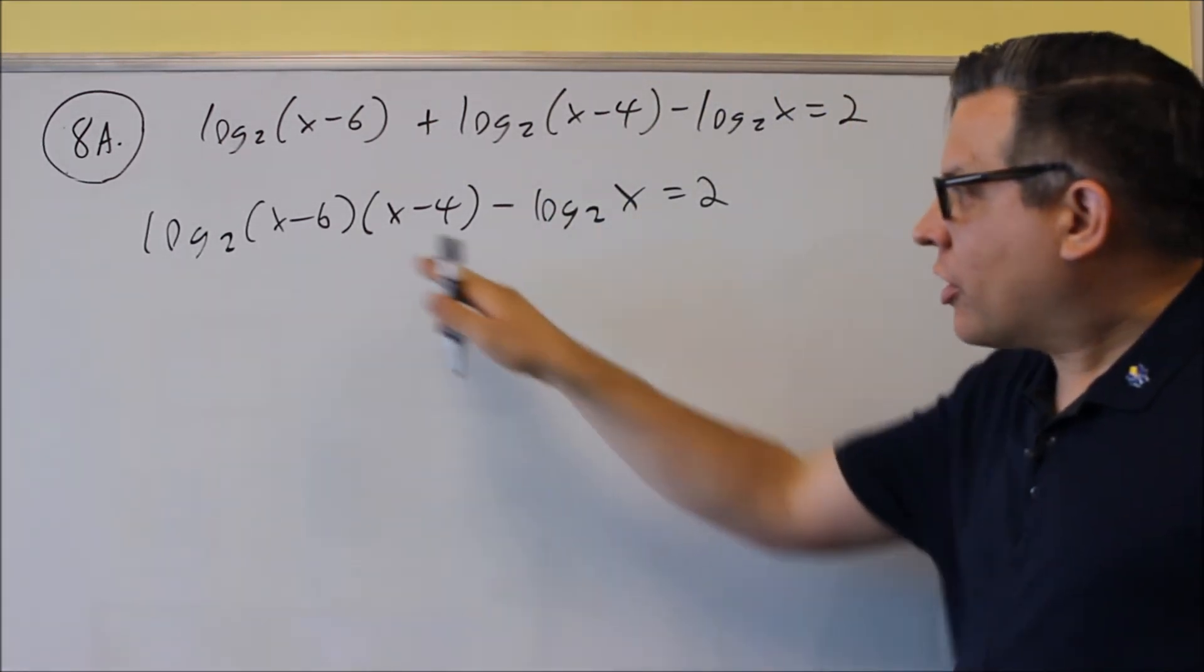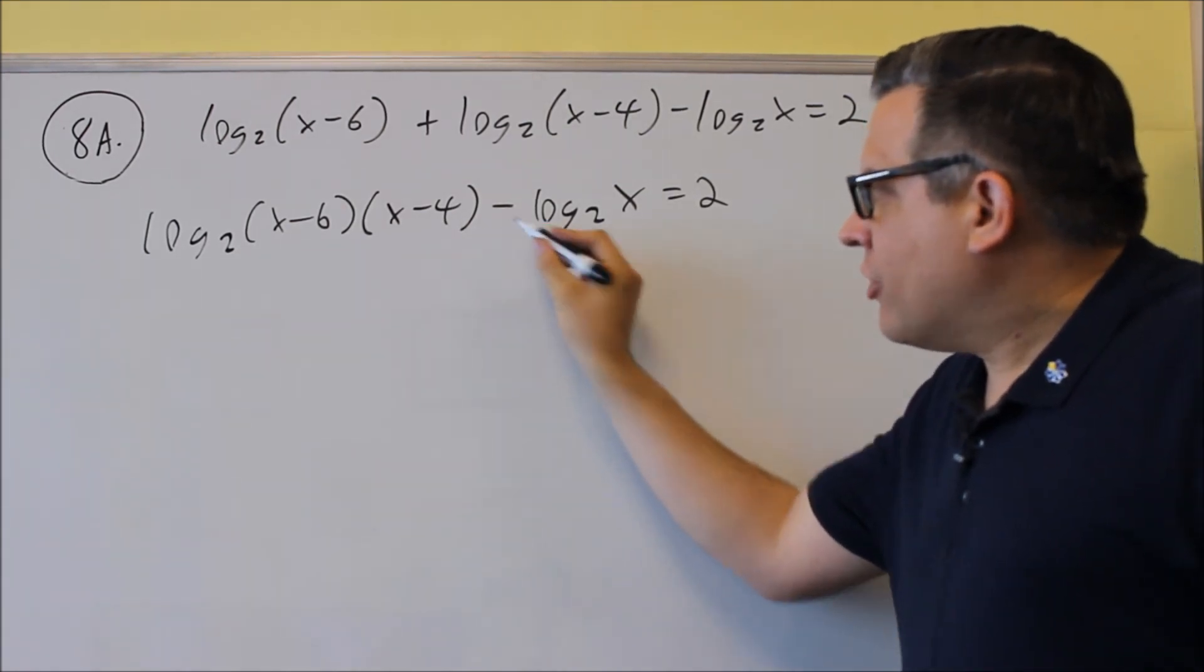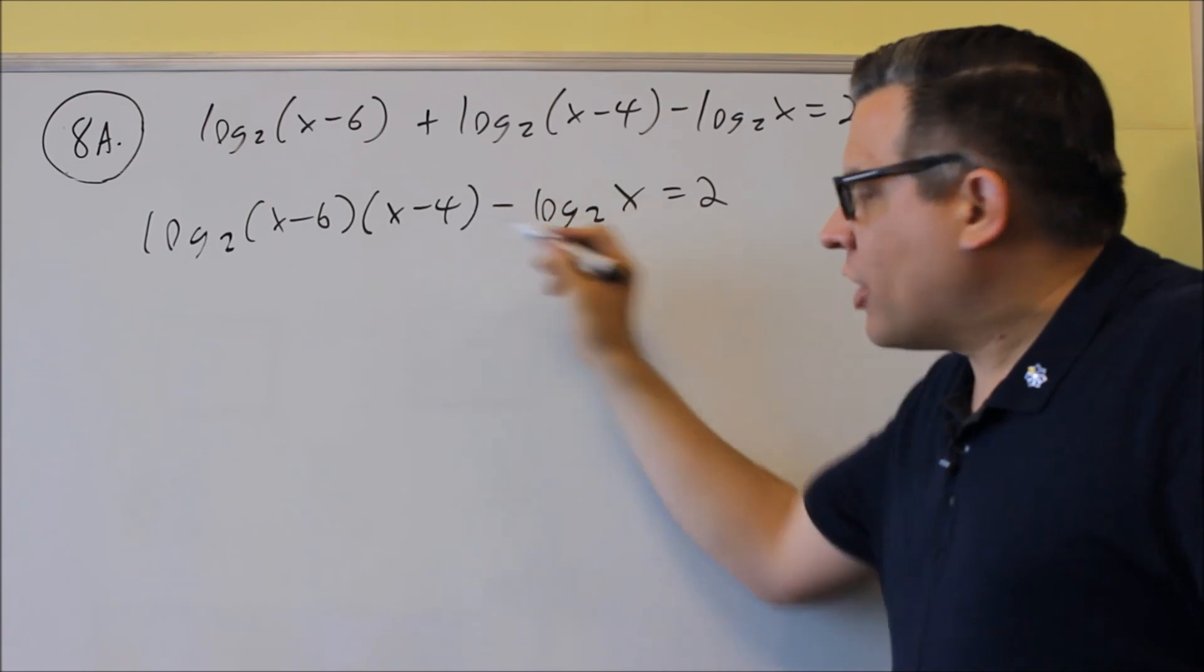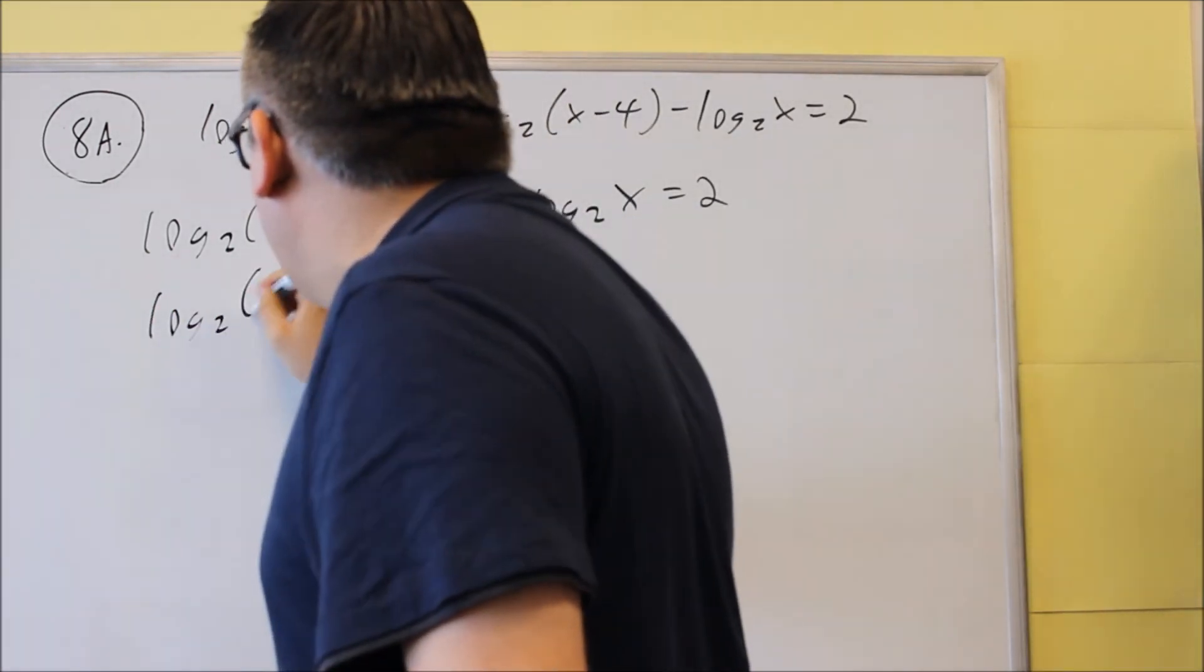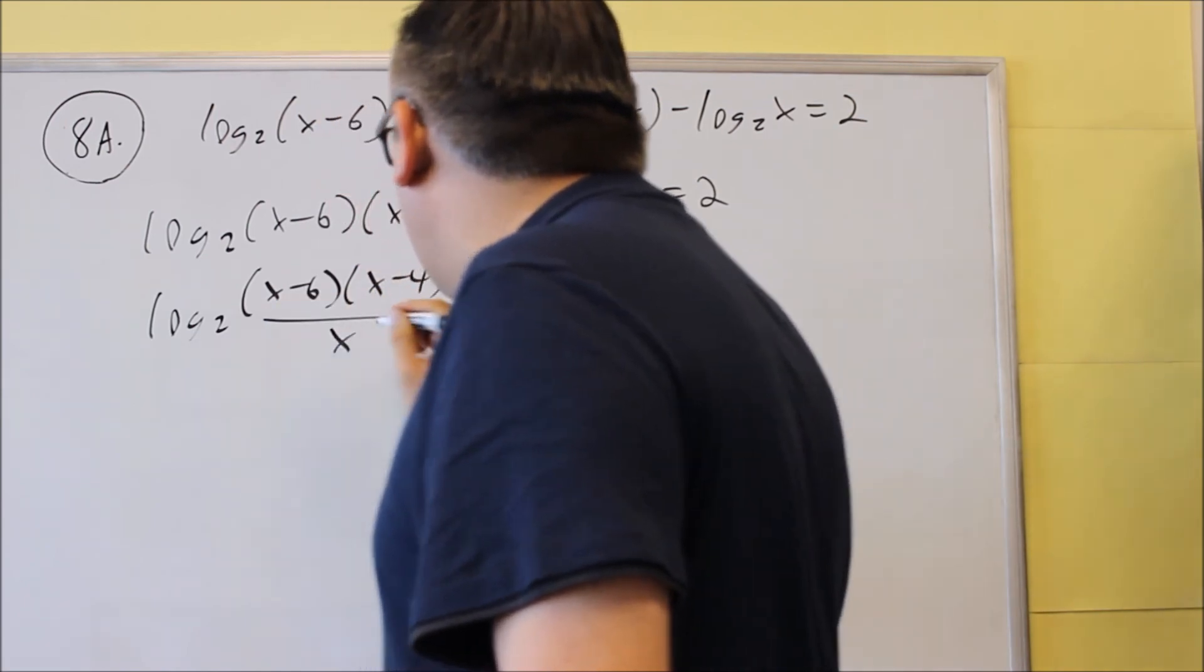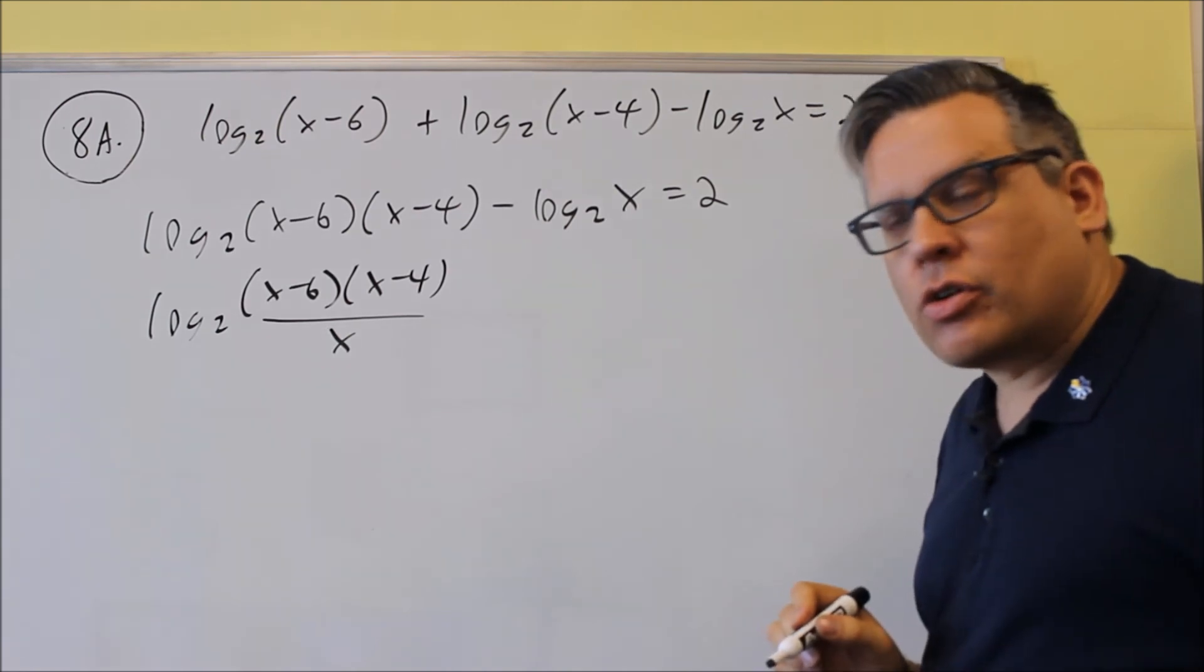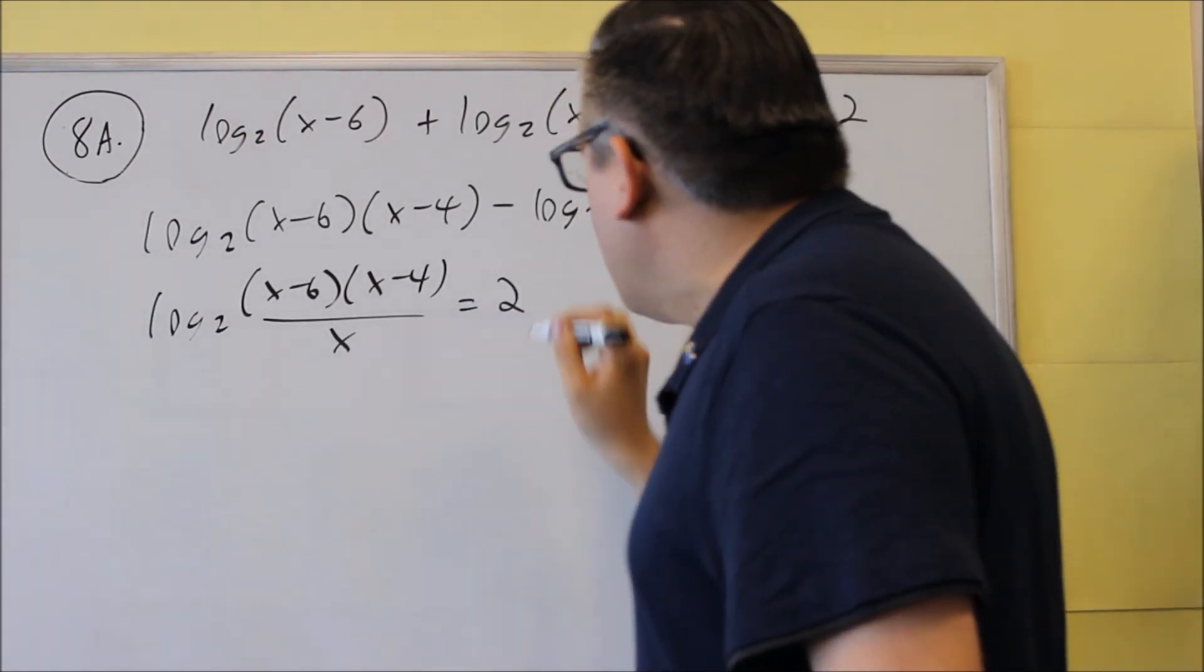And so the next step, we're going to combine these two logs together, the division we're going to use because we've got a minus sign there. So we're going to do log two of x minus six, x minus four, and then we put the x down below because, again, minus turns into division when you're using that log rule, and we have equals two.